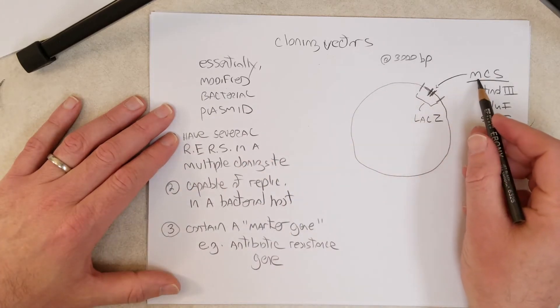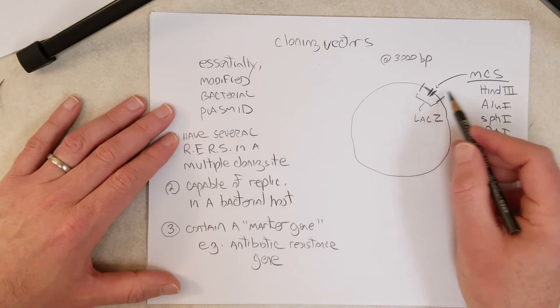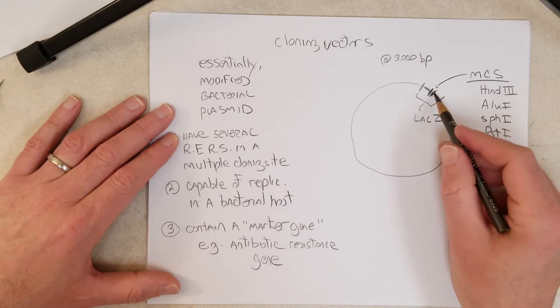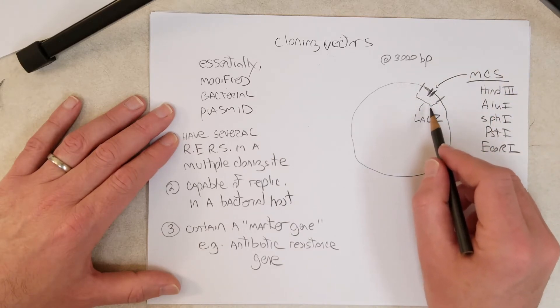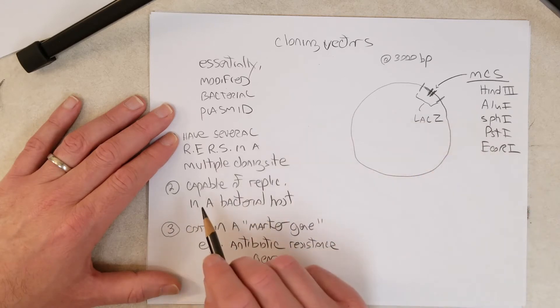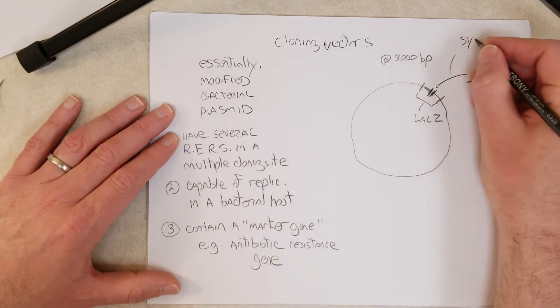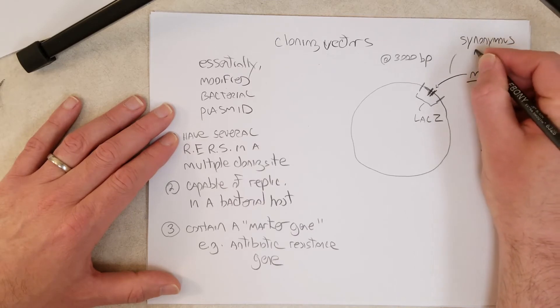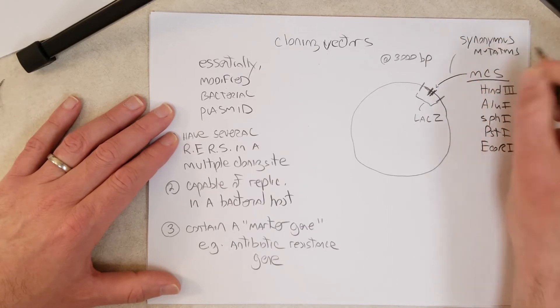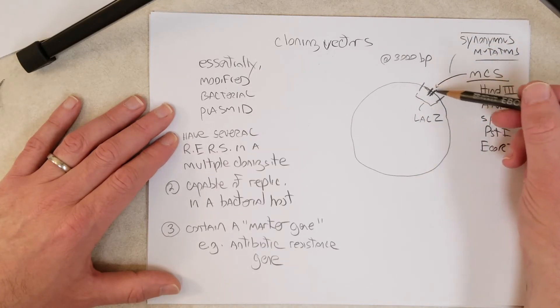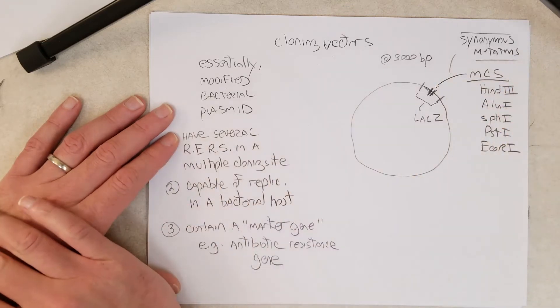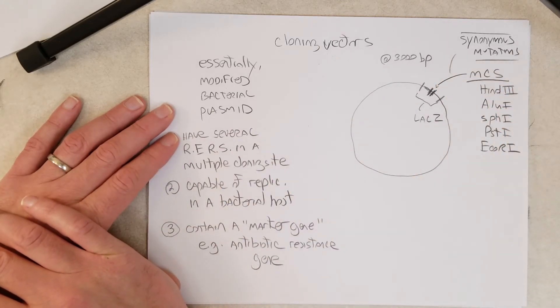You might be wondering, how can the multiple cloning site be in LAC-Z? Well, scientists are able to engineer the LAC-Z coding sequence to contain all these sites without disrupting LAC-Z from being functional by using synonymous mutations. By using synonymous mutations, you're able to put restriction enzyme recognition sequences within a gene without changing the codons, without changing the amino acids specified by the codons, or changing the order of the amino acids.